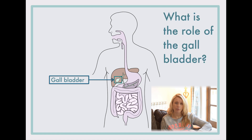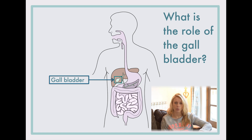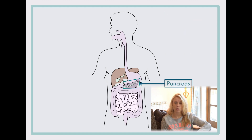The gallbladder and the liver are easy to mix up. The gallbladder is a much smaller structure and is purely responsible for storing bile — the liver makes it, and the gallbladder stores it. When bile is required in the small intestine, it's released down a duct, which is basically a small tube, into the small intestine into the duodenum.